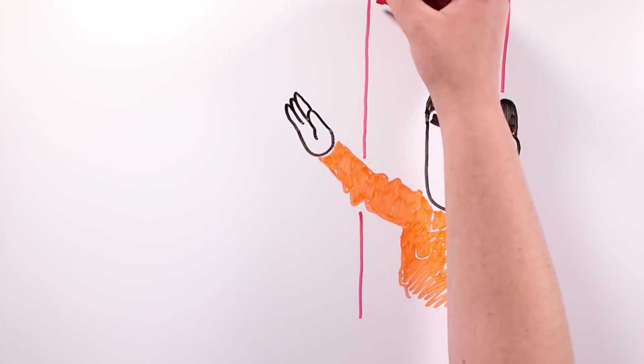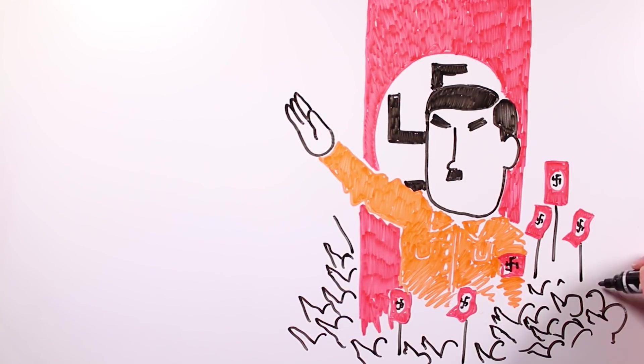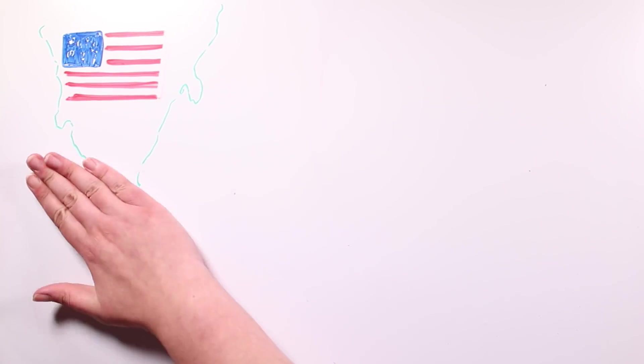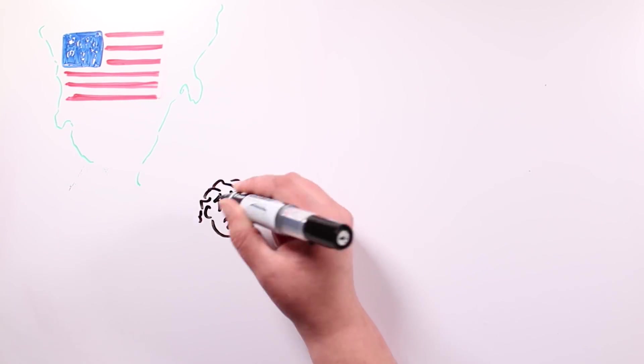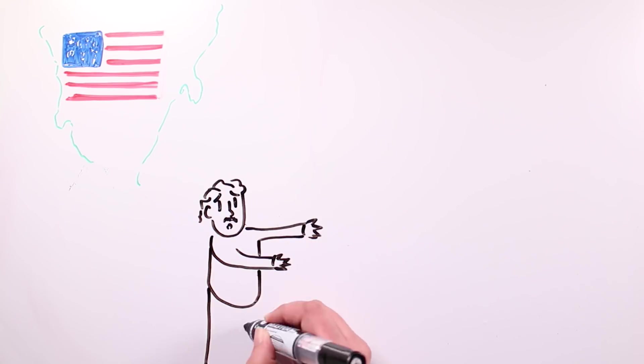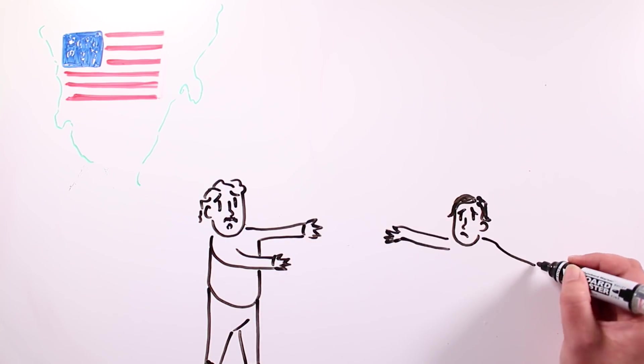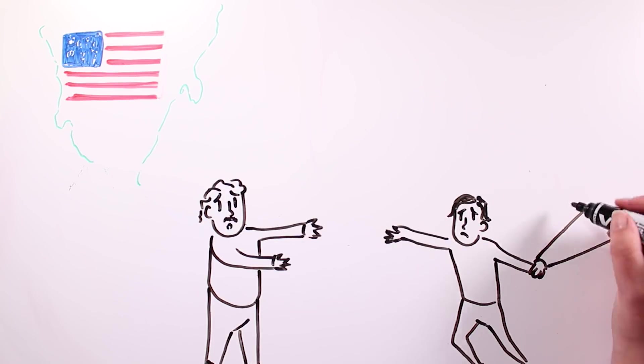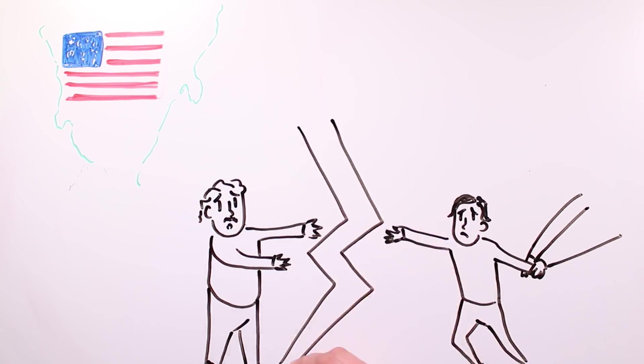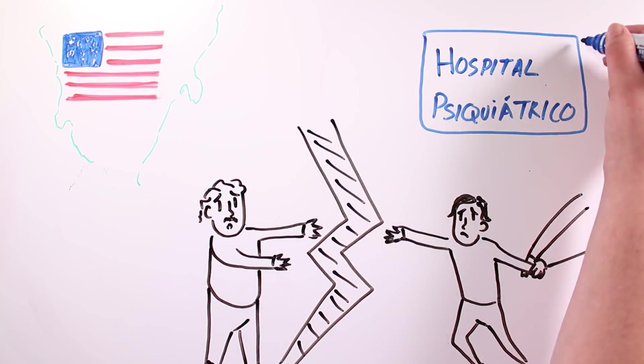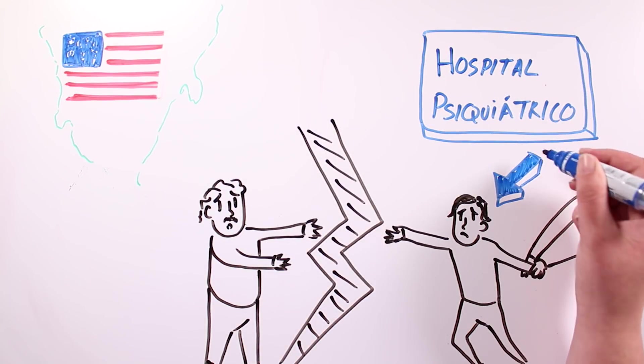In 1932, when the Nazis took power, Albert moved to the US. That same year, his son Edward, who was studying medicine, was diagnosed with schizophrenia and was hospitalized in a psychiatric hospital in Berlin. Albert tried, by all means, to take him with him to Princeton in the US, but the authorities prevented him from doing so. Edward died in 1965 at the psychiatric hospital.